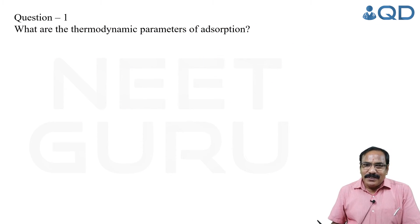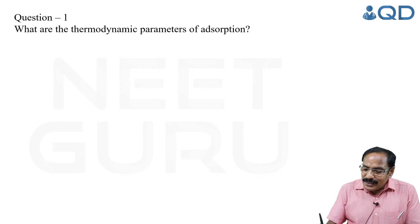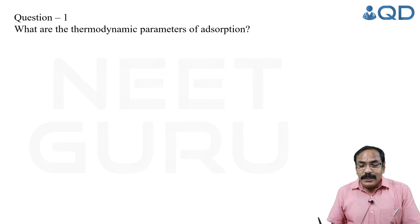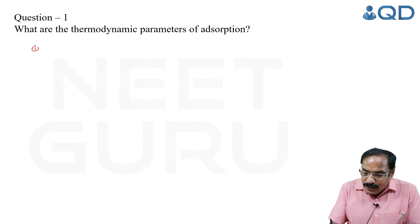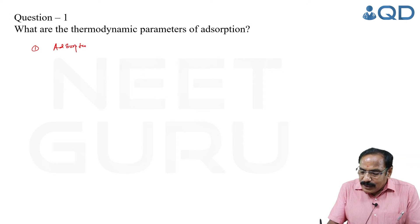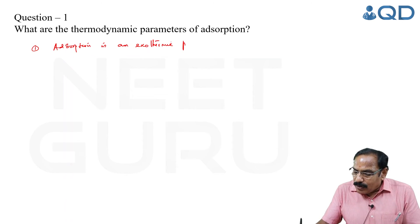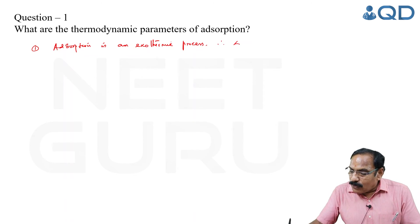A lot of thermodynamic parameters are involved. Number one: adsorption is an exothermic process. Whether it is physical adsorption or chemical adsorption, heat is evolved — therefore delta H is negative.